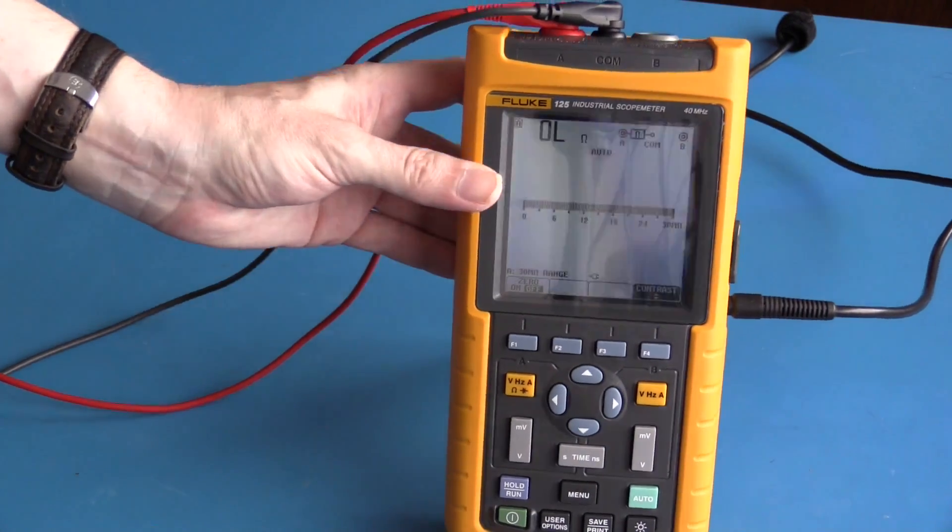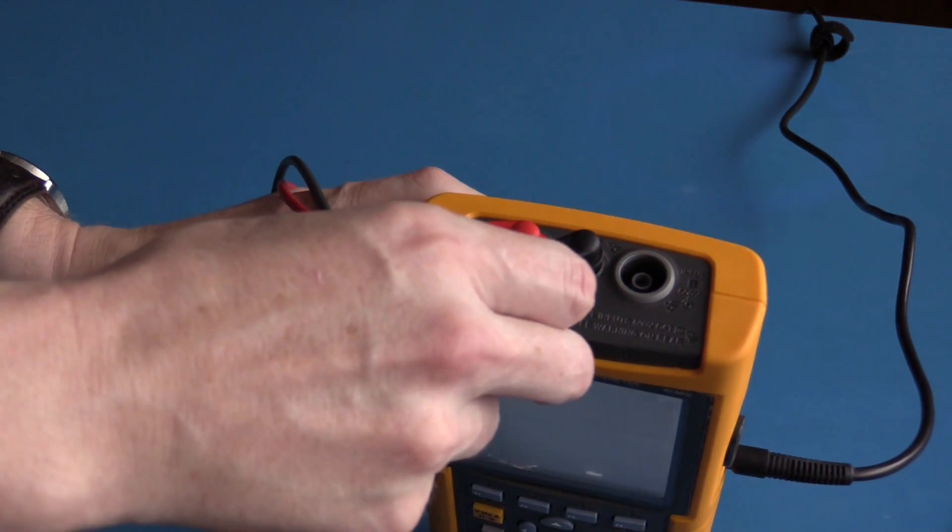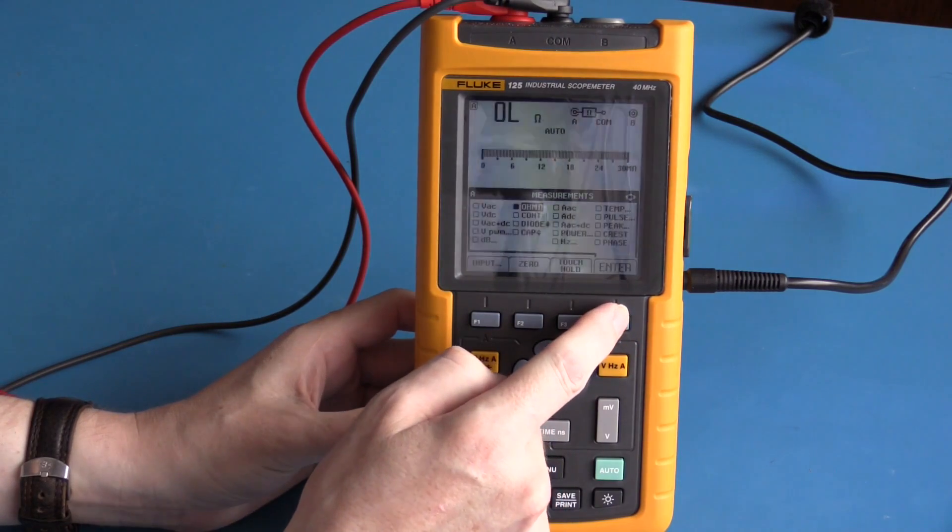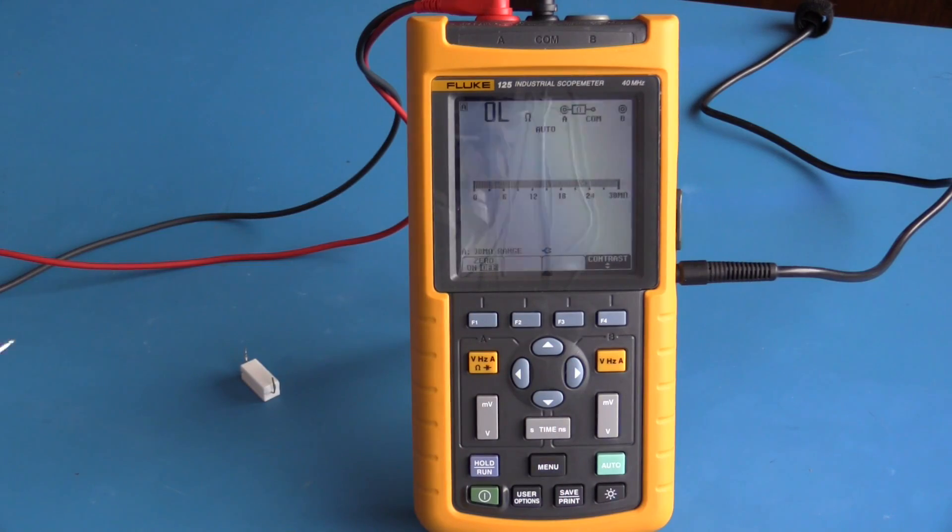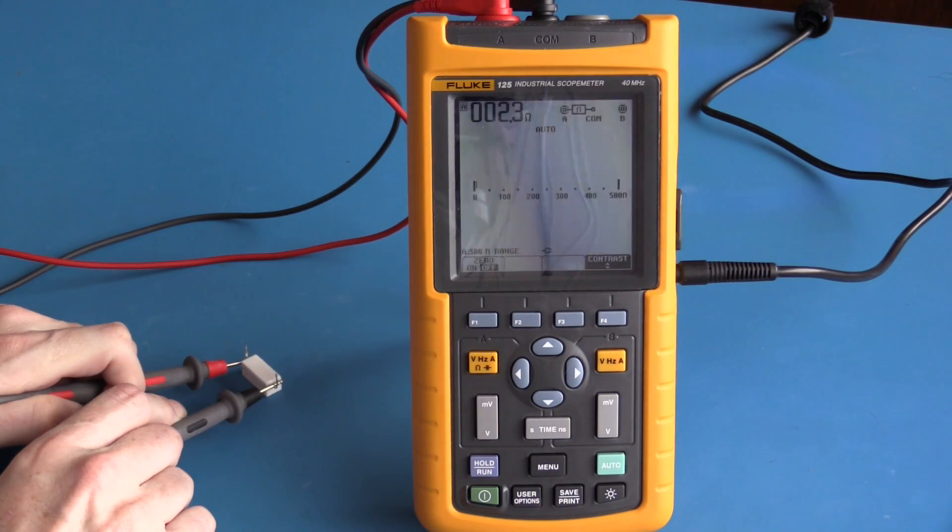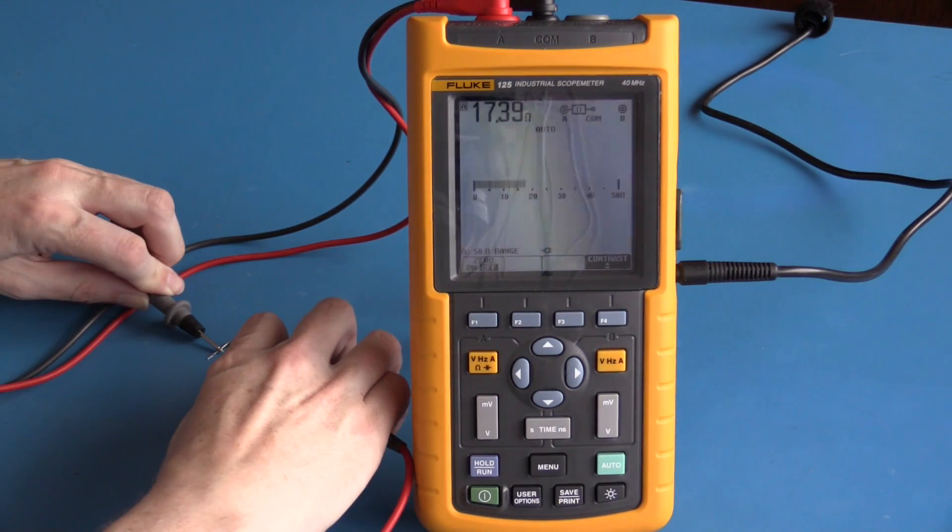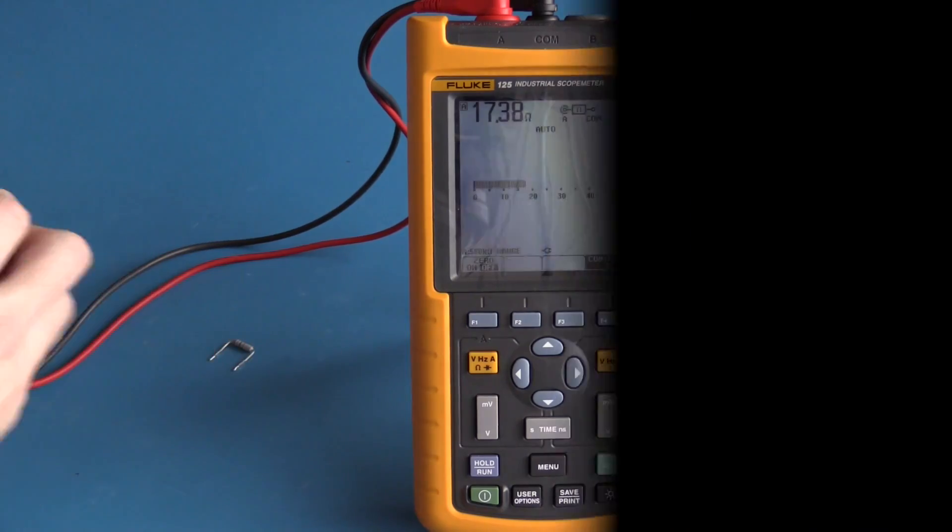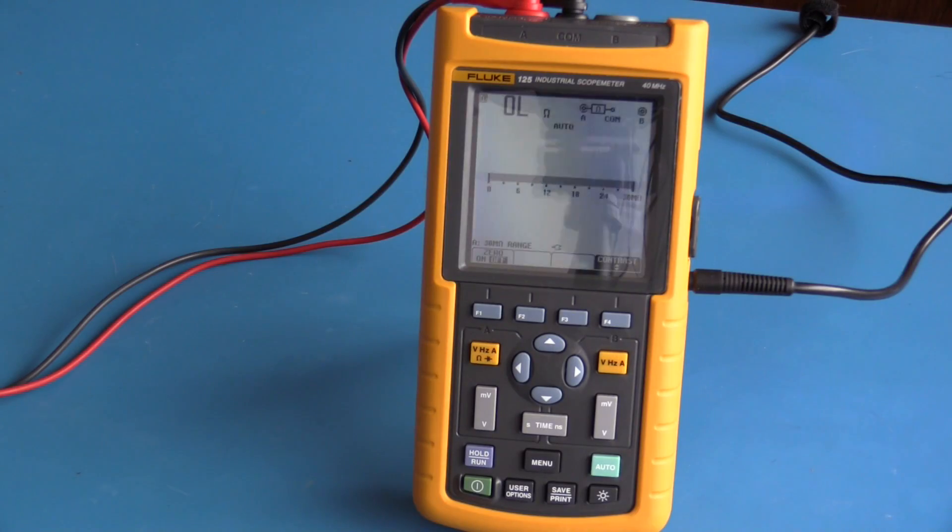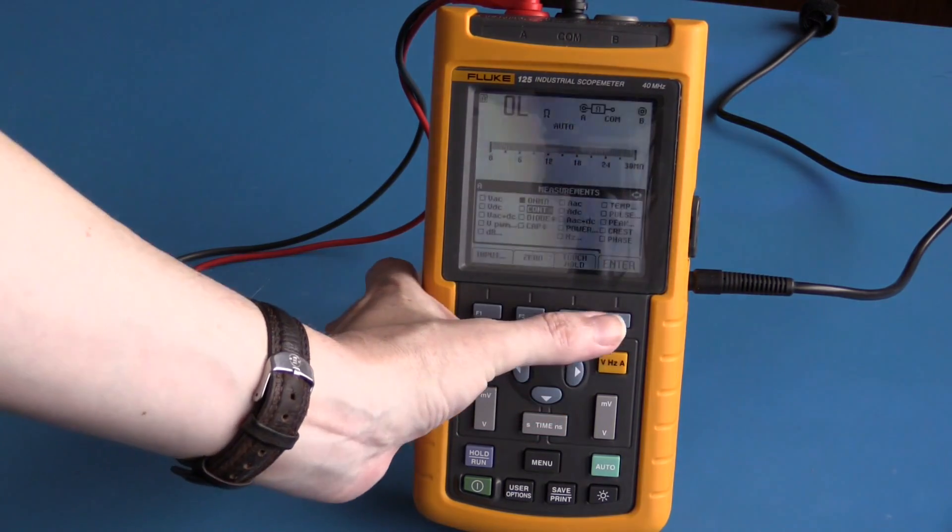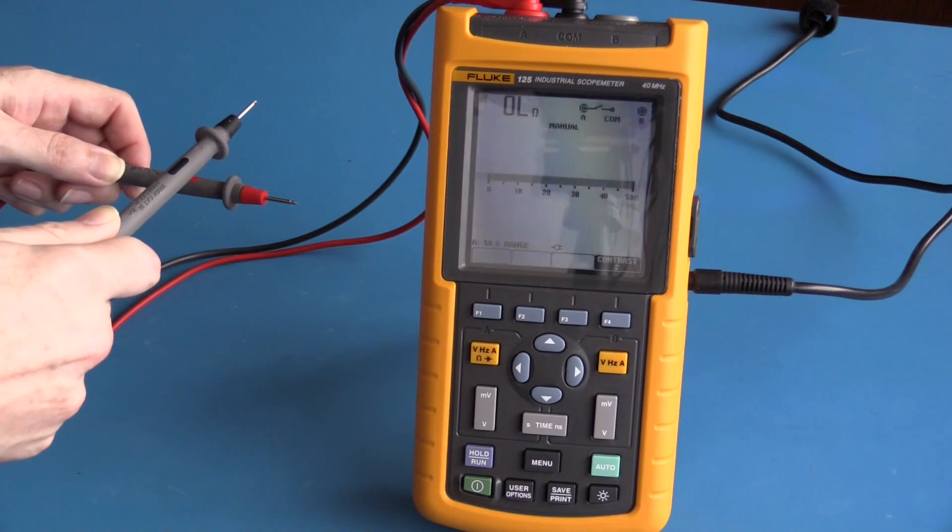For this setup we have the red lead plugged into the A channel and the black lead plugged into common. To measure resistance, select ohms and press enter. It does not matter which way around the test leads are. We have a reading of about 2.3 ohms, and this is approximately 17 ohms.